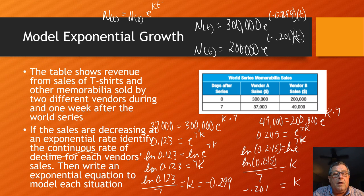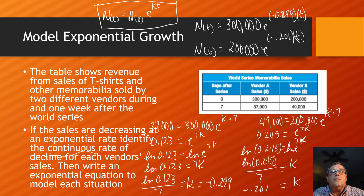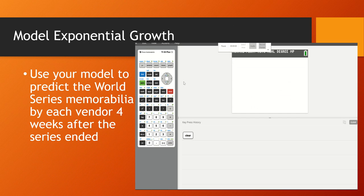All right, well, now we're going to jump to the calculator and finish it and do another couple of parts of this. This model right here is, this is our guide for a continuous rate of growth or a continuous rate of decline. All right, well, here I am over on the calculator and I will now, my next piece is to use the model to predict the World Series memorabilia sales for each vendor four weeks after the series ended. So four weeks would be 28 days, 28 times 7. All right, so I had one model that was 300,000, this was for vendor A.